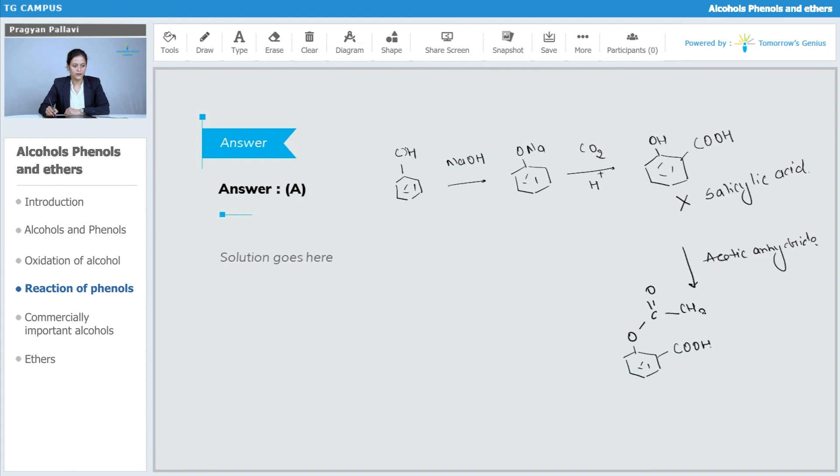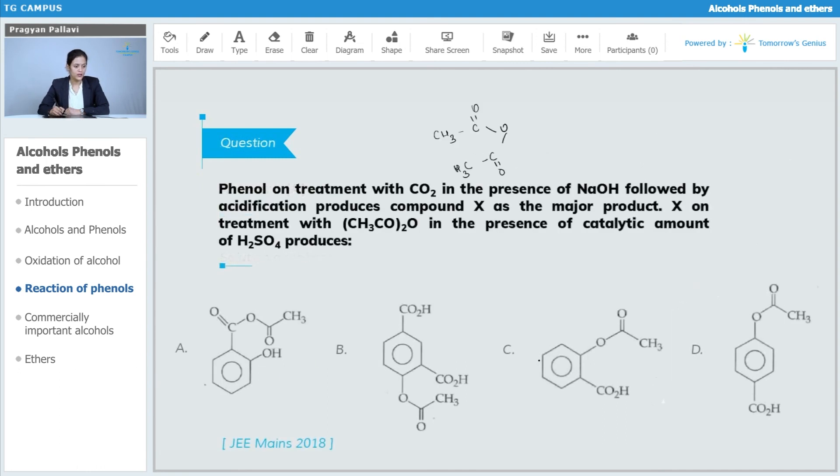Acetylated product. This is the product which we are going to obtain after acetylation using acetyl anhydride on this salicylic acid. So the correct answer will be option C.